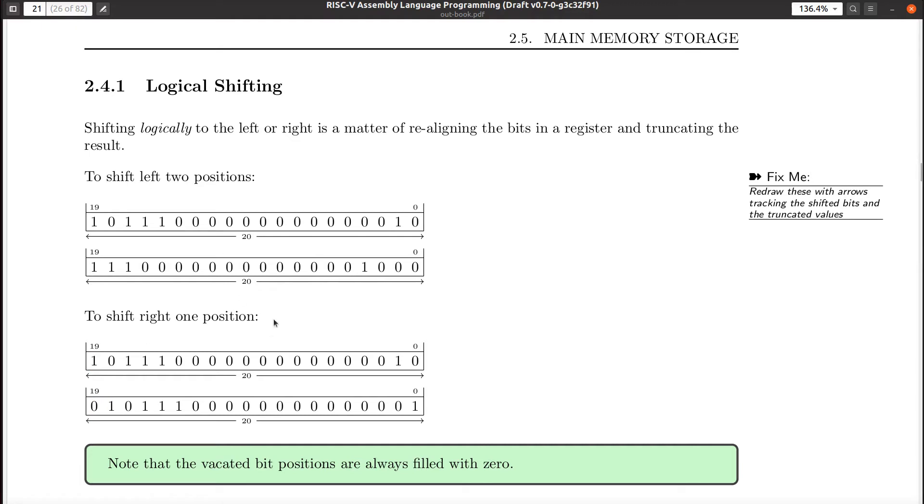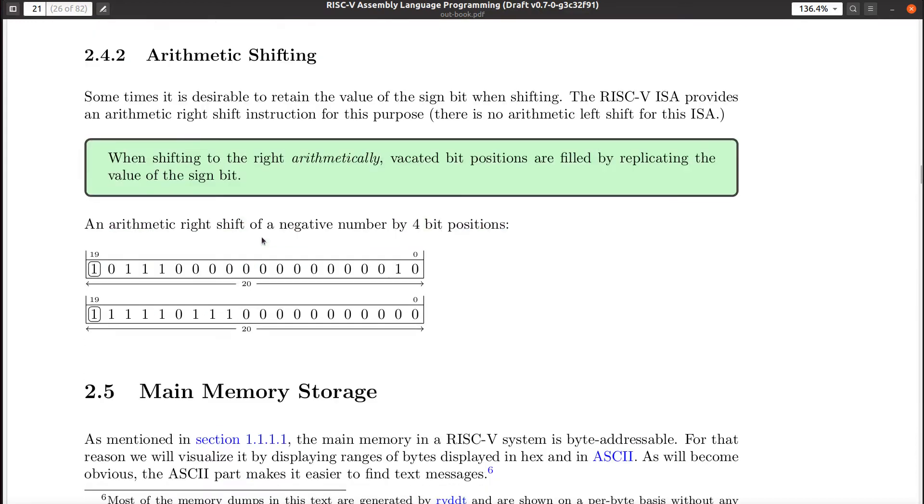Okay? So logical shifting, in my opinion, is easier to understand. It's literally what you mean. Okay? Arithmetic shifting means replicate this sign bit. All right? Now, if you think about this, why do you do this? Well, the reason we have both shifts is because you can use the arithmetic right shift to divide a value in half.